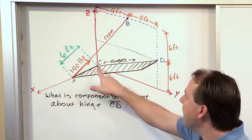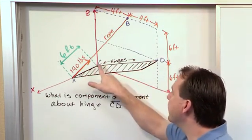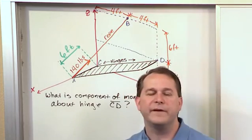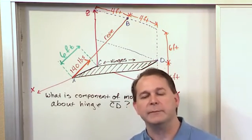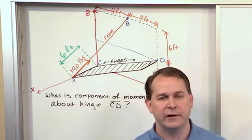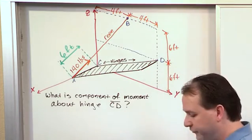But then we're going to end up dotting it with a vector that will define along the hinge line because we want to figure out how much of that moment that's developed is actually lying along the hinge there. So that's the strategy of the problem.